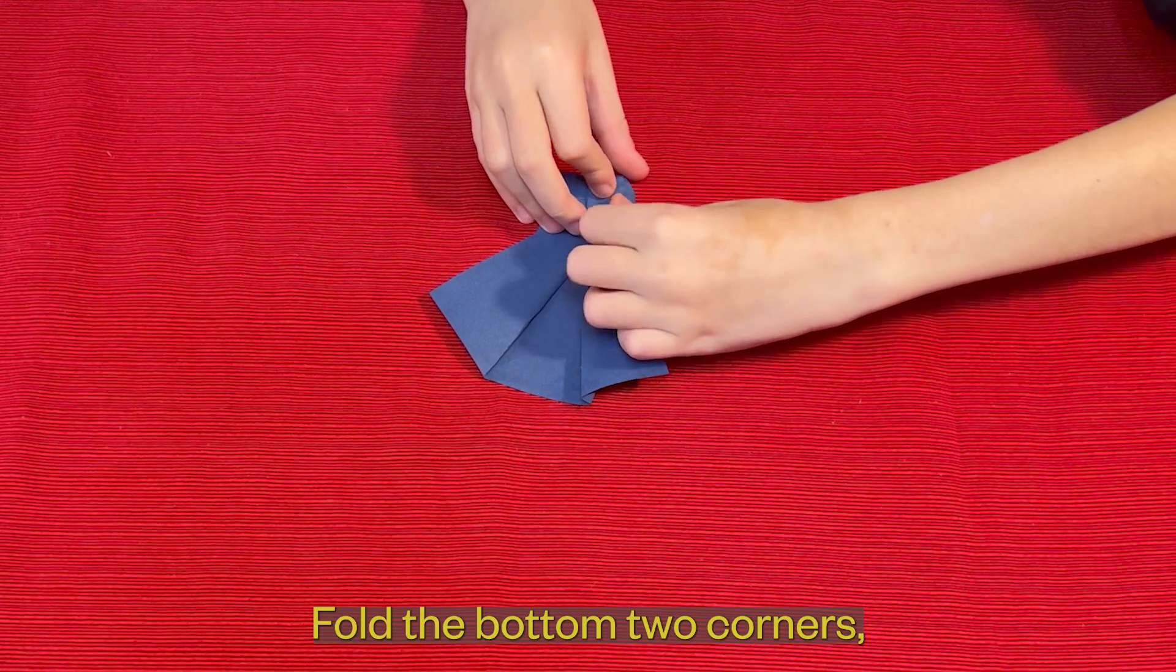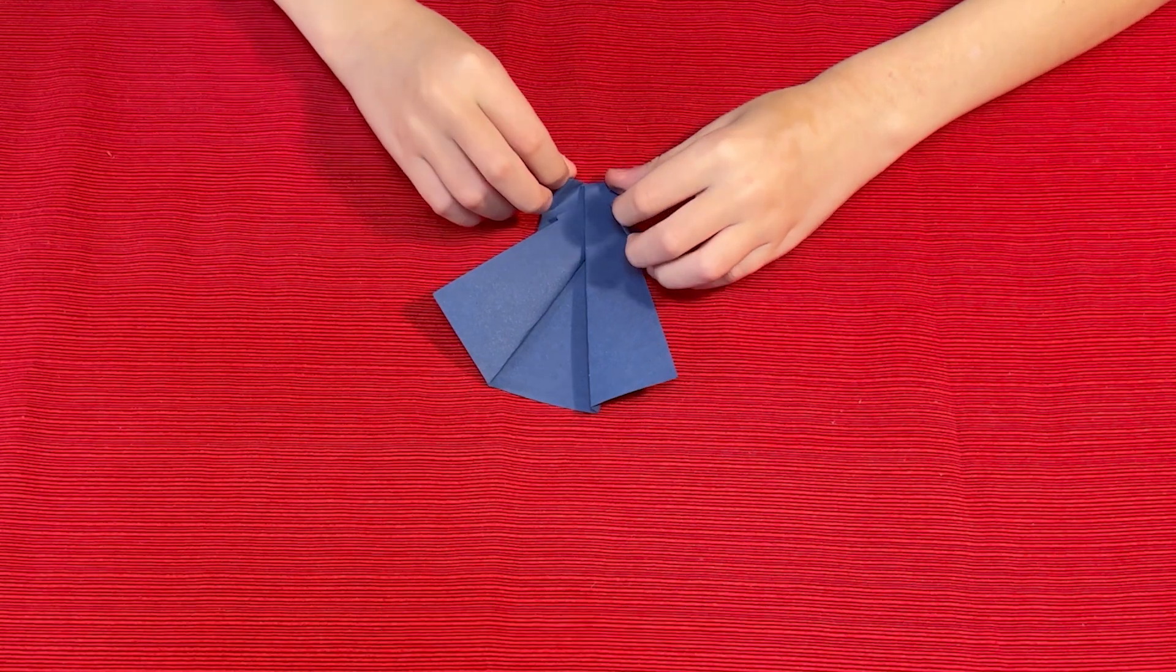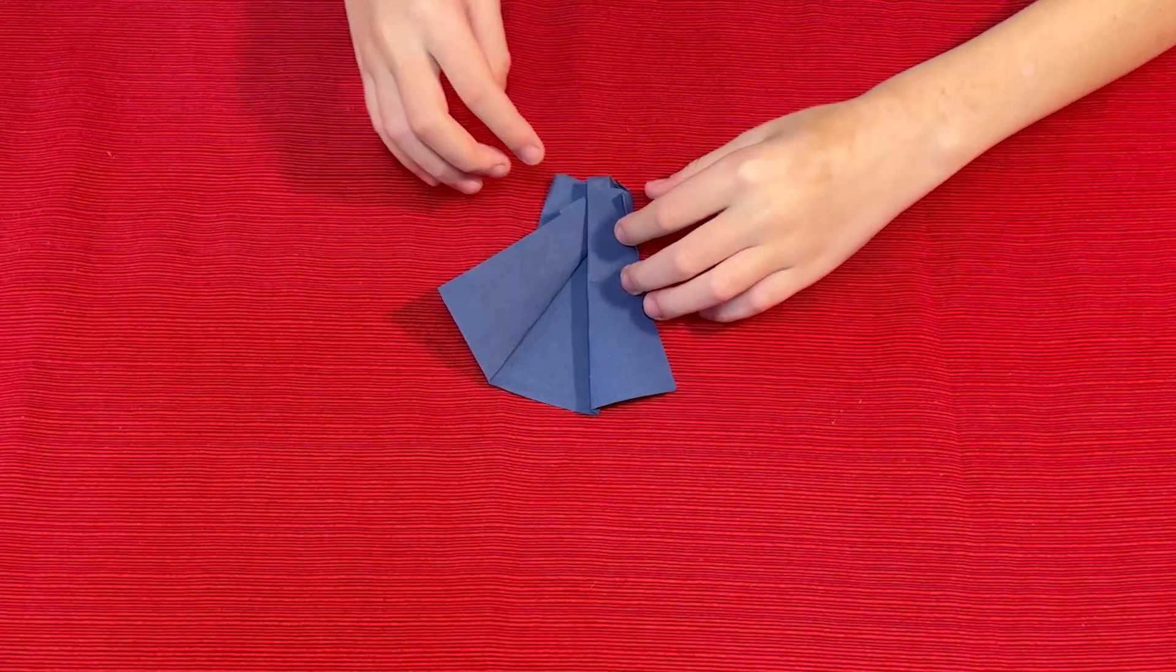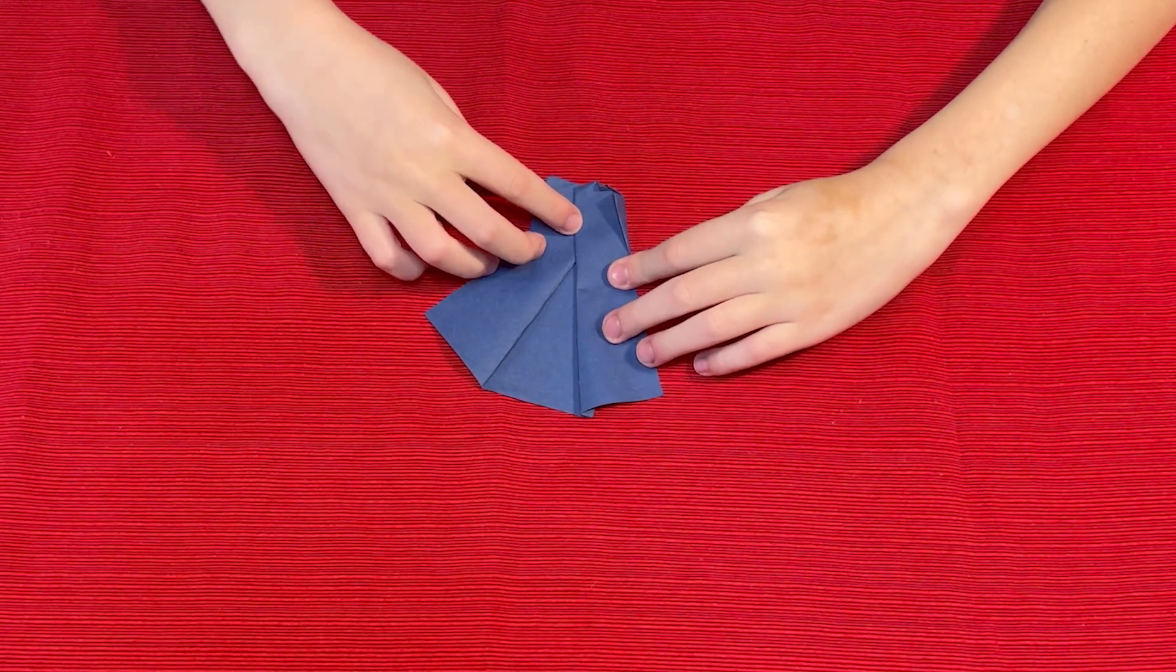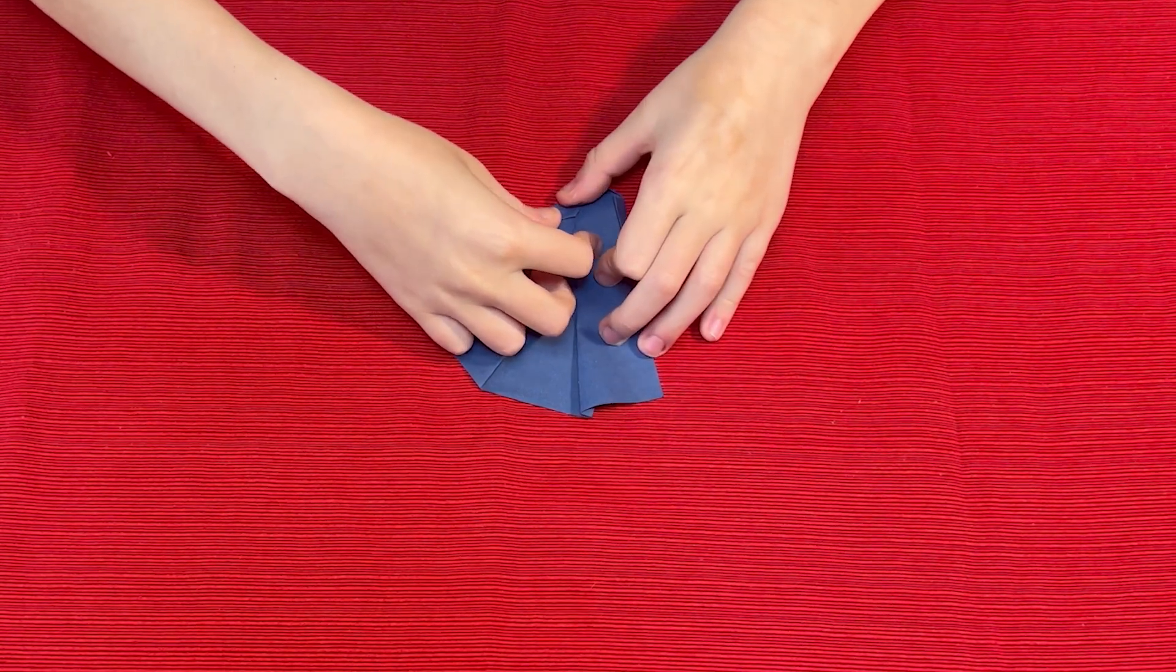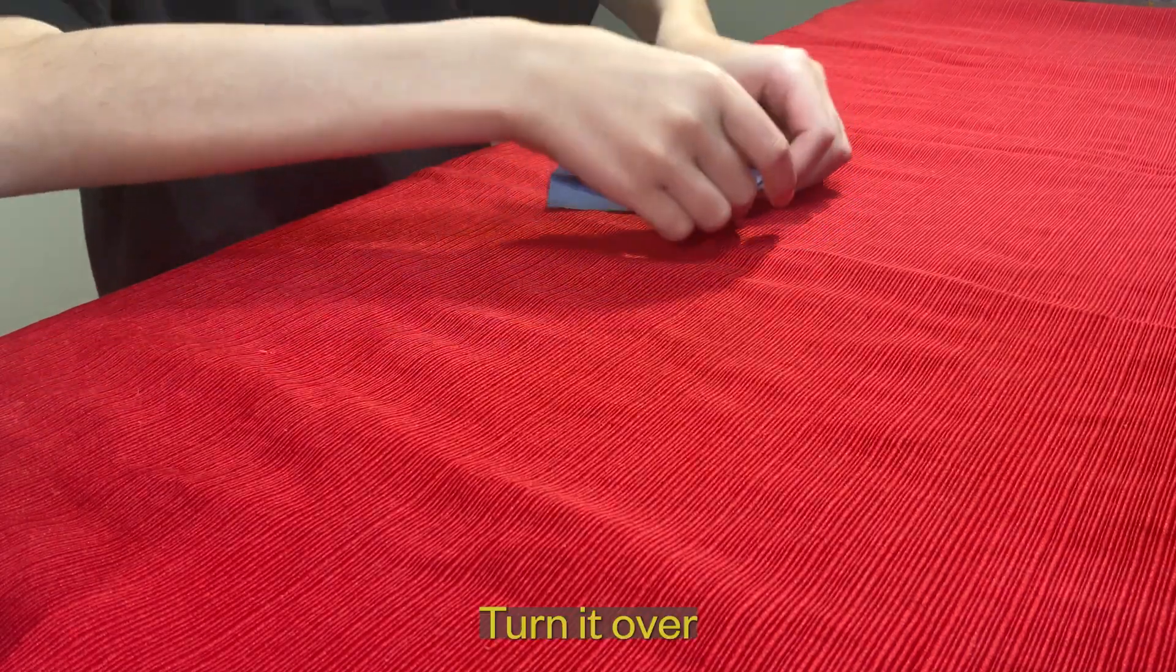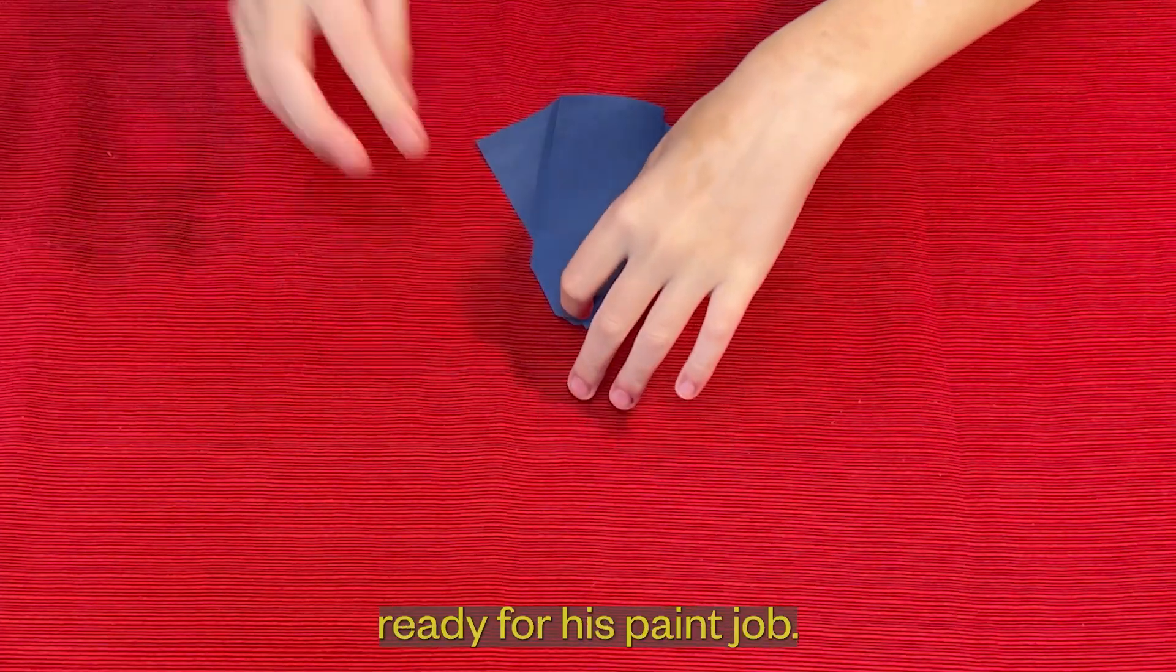Fold the bottom two corners, just about a half inch. Turn it over, and you have R2-D2 ready for his paint job.